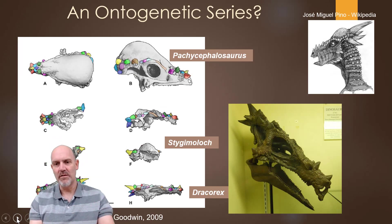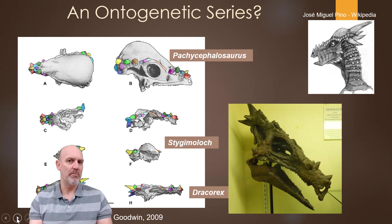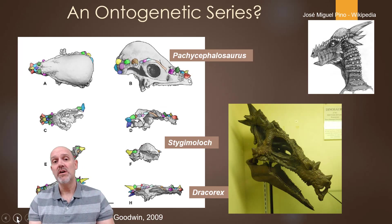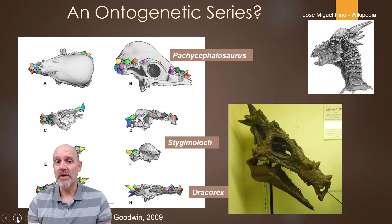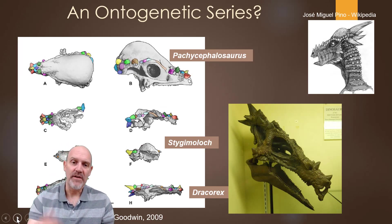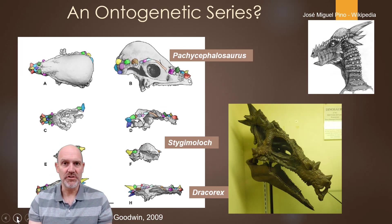What he was describing is that the foramen magnum — the hole in the back of the head — is lined up directly underneath the animal, so the spine goes into the head such that when it hits something, it doesn't damage the backbone. The backbone goes into the skull at 90 degrees. That character was portraying Bob Bakker, a famous paleontologist we've already read about in the book.